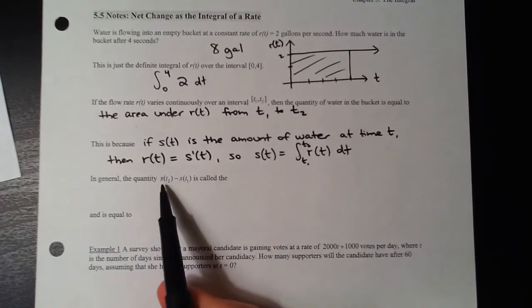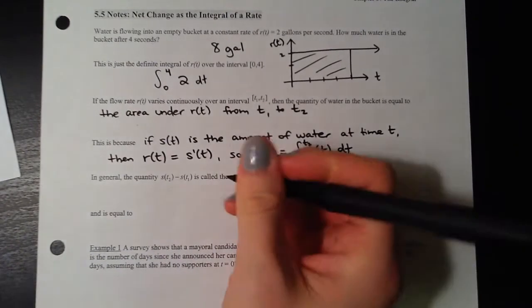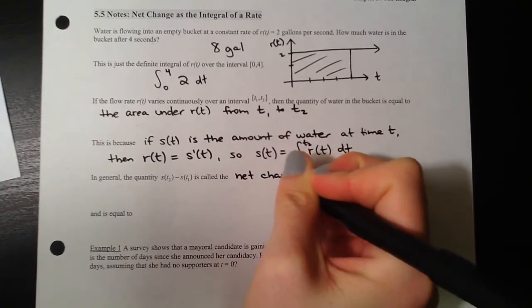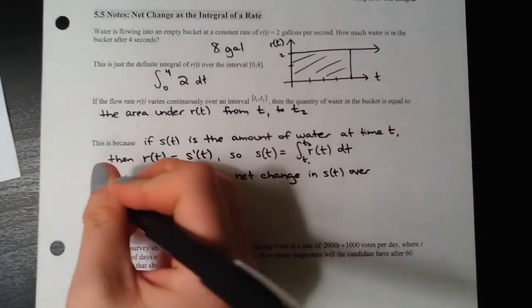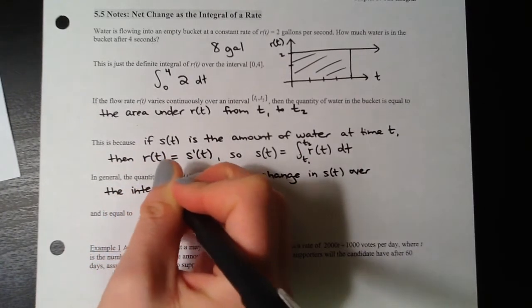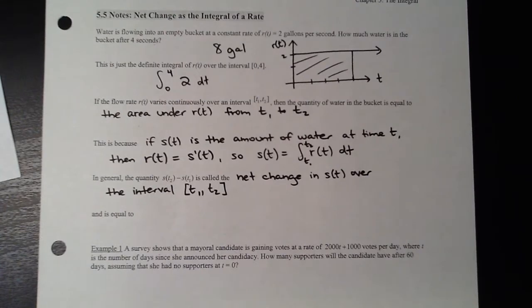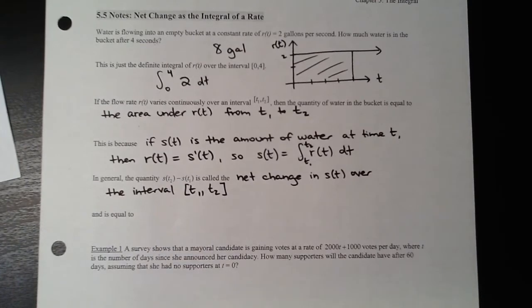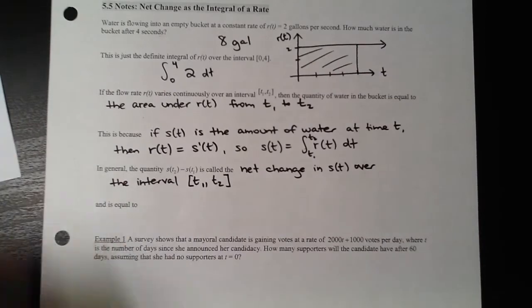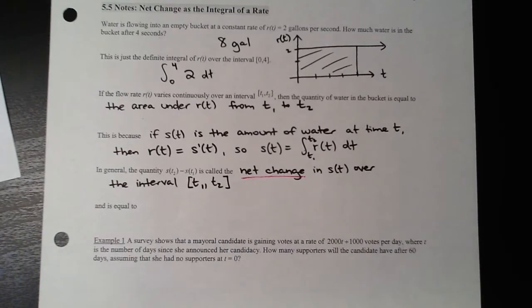Net change is a huge idea — we're going to talk lots about net change over the next couple days and tons about it while studying for the AP test. This quantity s(t2) minus s(t1) is equal to the definite integral. By the First Fundamental Theorem, we take the antiderivative — which is s(t) — from t1 to t2: plug in the upper bound minus plug in the lower bound.